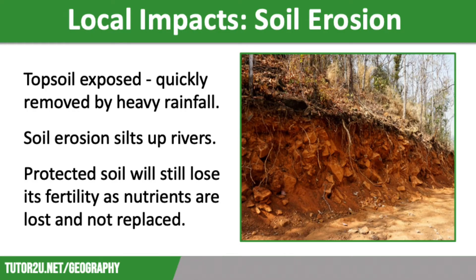Deforestation also has an impact on soil erosion and fertility. Chopping down trees leaves the thin topsoil layer exposed, which is quickly removed by heavy rainfall — a big issue in the rainforest. Without the topsoil layer it is very hard for any vegetation to grow. Soil erosion also leads to the silting up of river courses, which has an impact on marine ecosystems and increases the risk of flooding.